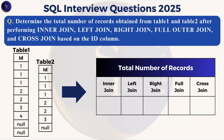We'll be performing inner join, left join, right join, full outer join, and cross join based on the ID column. During an interview, they won't ask you to write queries — they'll directly tell you the records in table one and table two and ask how many records result from each join. First we'll calculate manually just by looking at the tables, then we'll verify using SQL.